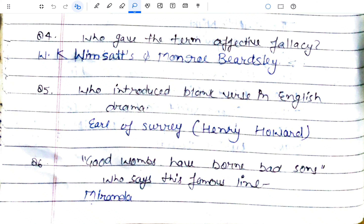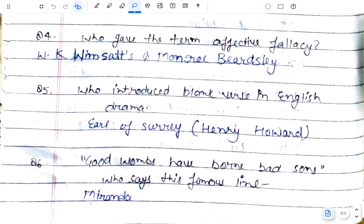Who introduced blank verse in English drama? The Earl of Surrey, also known as Henry Howard. Blank verse is unrhymed lines in iambic pentameter. It was introduced by the Earl of Surrey in his translation of Books 2 and 4 of Virgil's Aeneid. The first time blank verse was used in English drama was in 'Gorboduc', written in 1561.